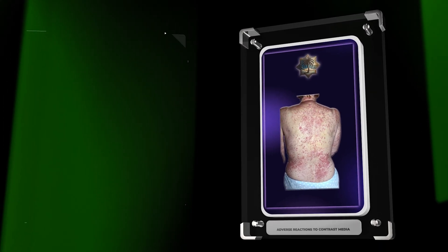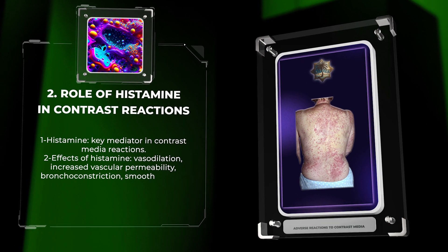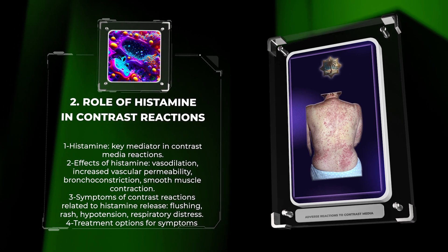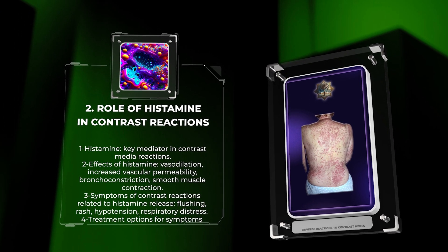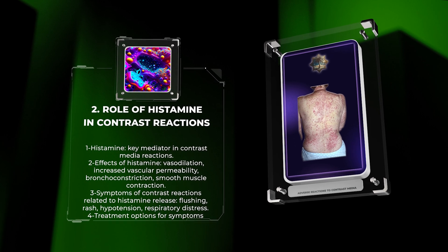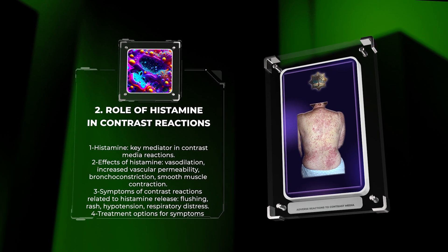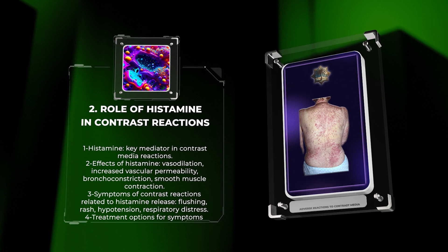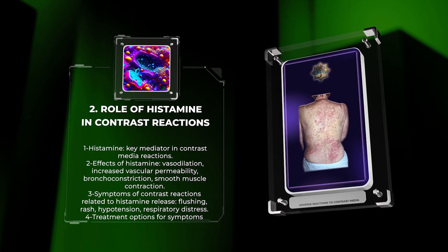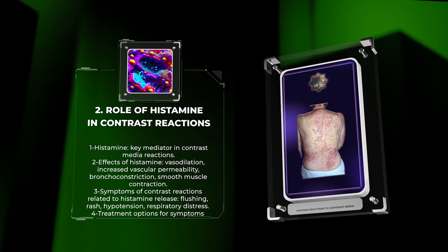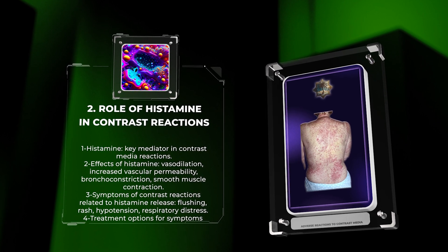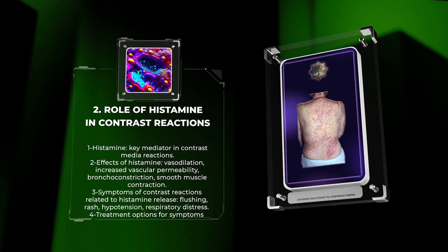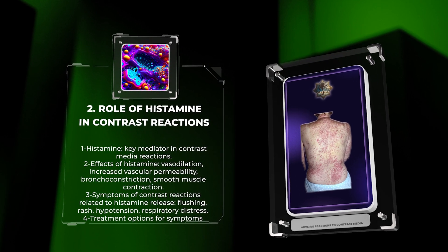Histamine is a key mediator involved in contrast media reactions. It is released from mast cells following IgE-mediated activation. Histamine causes vasodilation, increased vascular permeability, bronchoconstriction, and smooth muscle contraction. These effects contribute to the characteristic symptoms observed in contrast reactions, including flushing, rash, hypotension, and respiratory distress. Antihistamines, such as diphenhydramine or cetirizine, can be administered to alleviate symptoms related to histamine release.